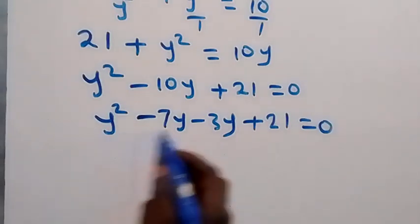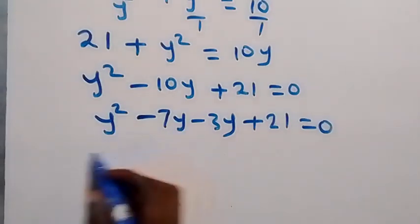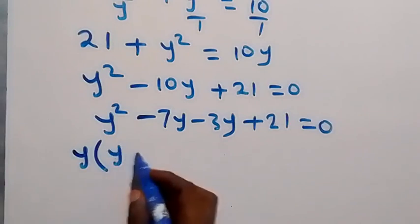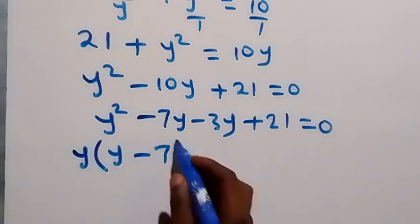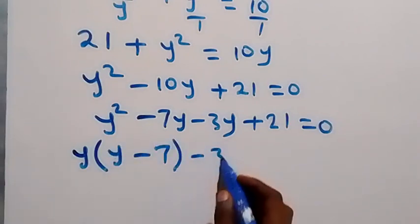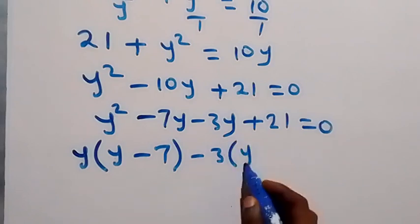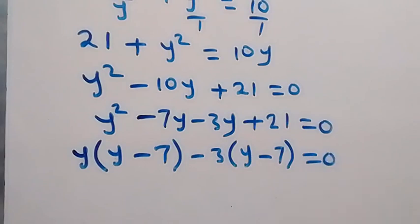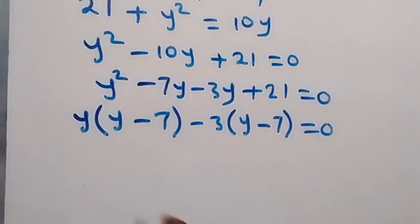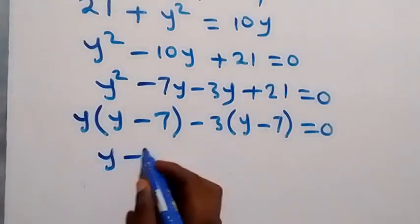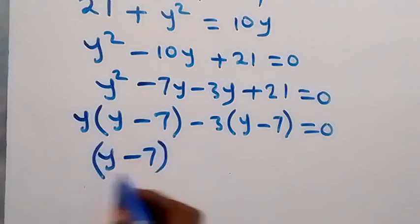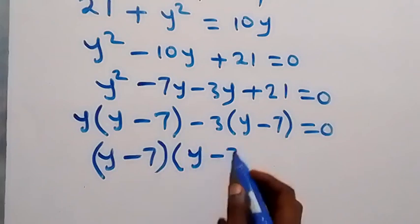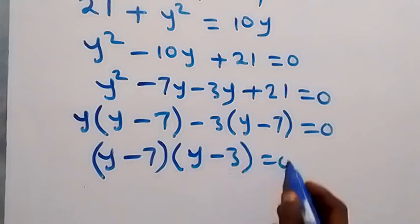From here, we group in pairs. What is common in the first group is y, giving y times (y minus 7). Then minus 3 is common in the second group, leaving (y minus 7) as well, which equals to 0.